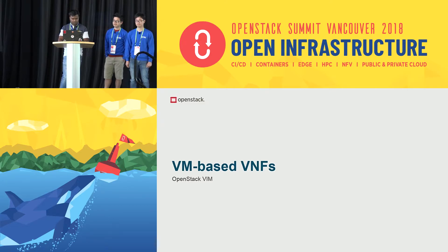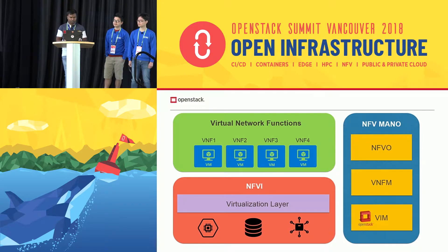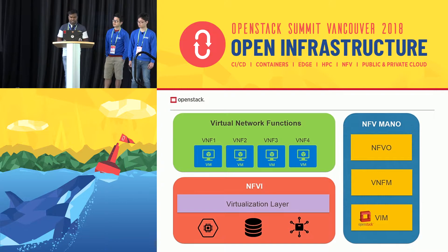The first topic is VM-based VNFs. Here we can see that there is a virtualization layer on top of physical resources, and we use OpenStack as VIM. Using OpenStack services like Nova and Neutron, you can create virtual network functions on that NFVI.